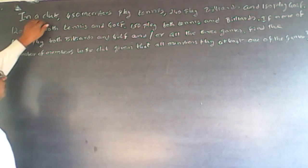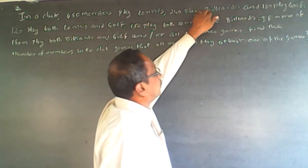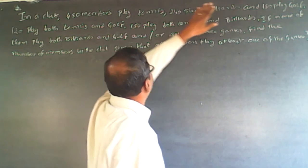The question is, in a club, 450 members played tennis, 240 played billiards, and 180 played golf.